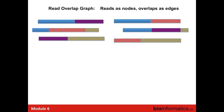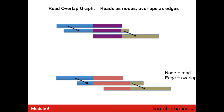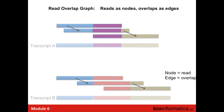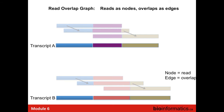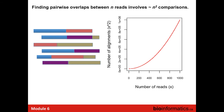One approach is to take all reads, identify all overlaps, treat each read as a node in the graph, and traverse overlaps to reconstruct transcripts. This works fine with thousands of reads, but once you have millions or billions of reads, determining all overlaps becomes computationally challenging. The number of alignments required for determining overlaps grows exponentially as a function of the number of reads — not feasible with short-read data.